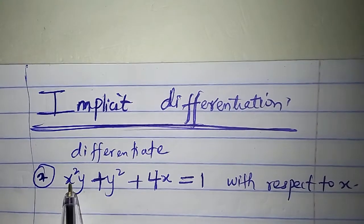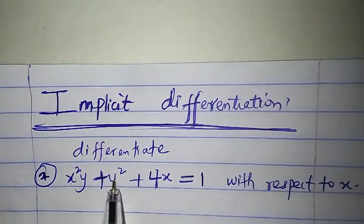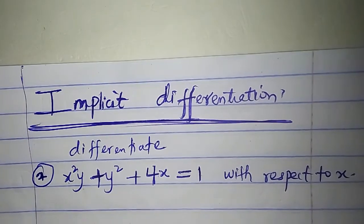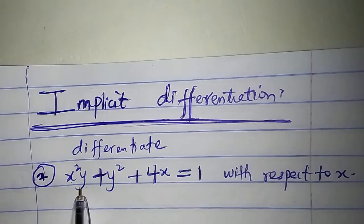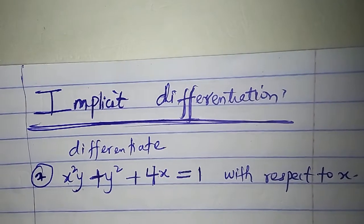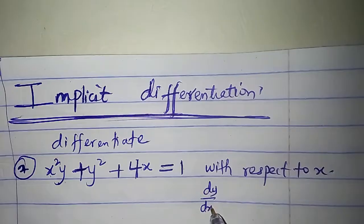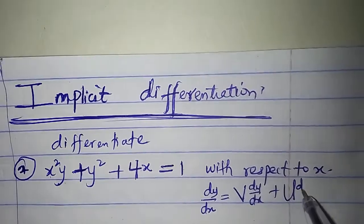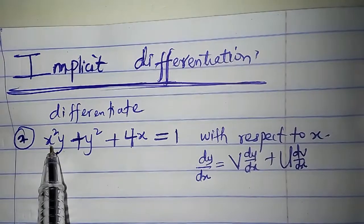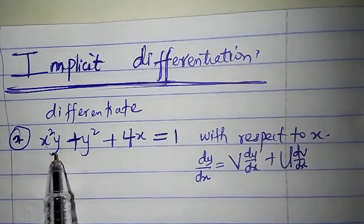The next question: differentiate the function x squared y plus y squared plus 4x equal to 1. I will differentiate term by term. The first term, x squared y, is a product of x squared and y. So to differentiate it, I will make use of the product rule, which states dy/dx equals v du/dx plus u dv/dx. We can take x squared as v and y as u, or x squared as u and y as v — either way is correct.